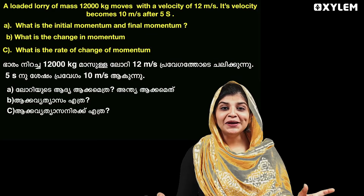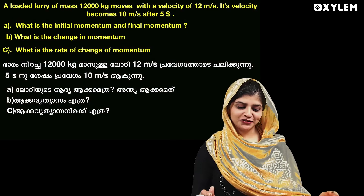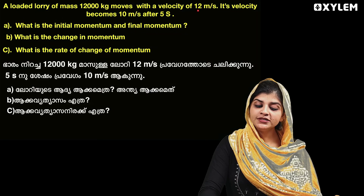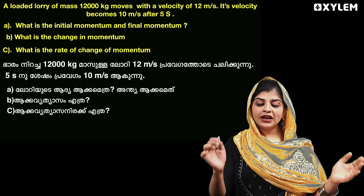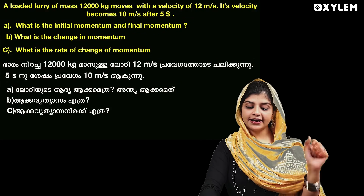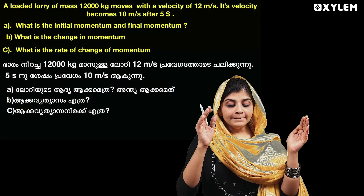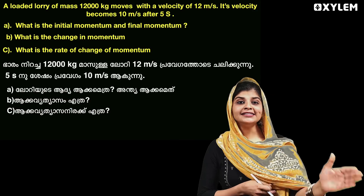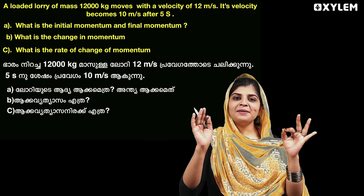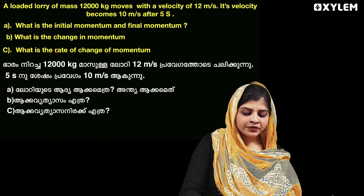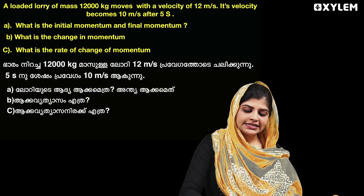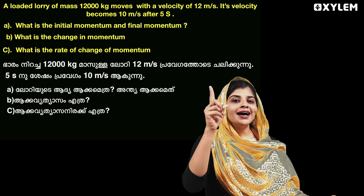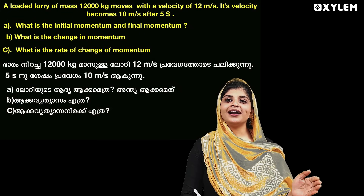This is a very important question. All the questions will be answered. A loaded lorry of mass 12,000 kg moves with a velocity of 12 m per second. Its velocity becomes 10 m per second after 5 seconds. In the mass, there are two velocities: one is the initial velocity and the other is the final velocity.